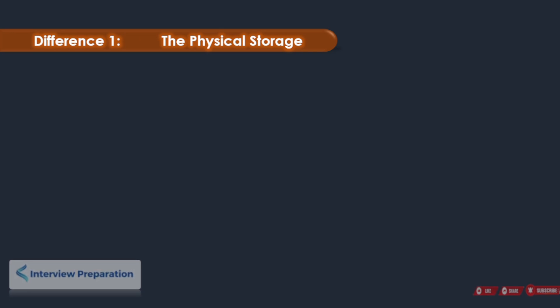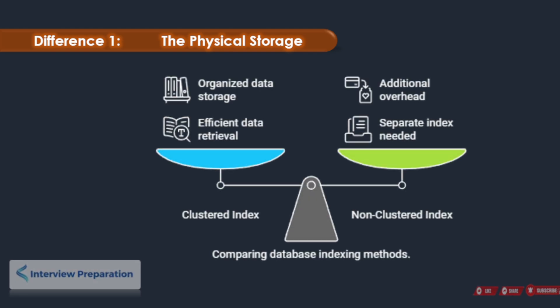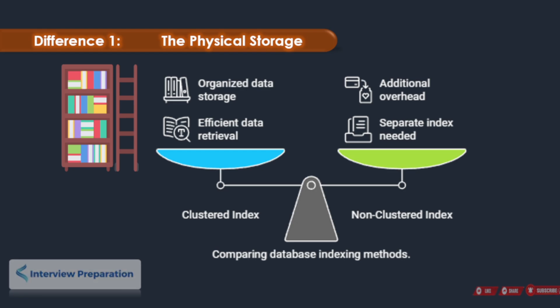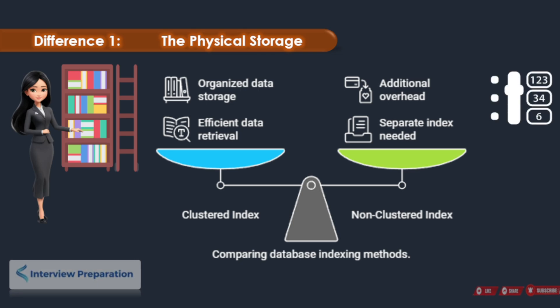Let's see the first difference: physical storage. Think of your database as a library. The clustered index is like the librarian who dedicatedly arranges all the books on the shelves — every book is in its designated spot, making it easy to find any book you need. On the other hand, the non-clustered index is like a card catalog; it provides a separate index that points to the location of the book on the shelf.